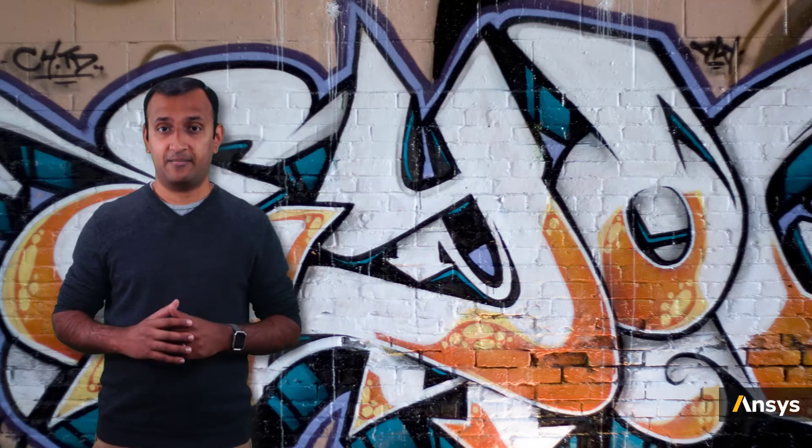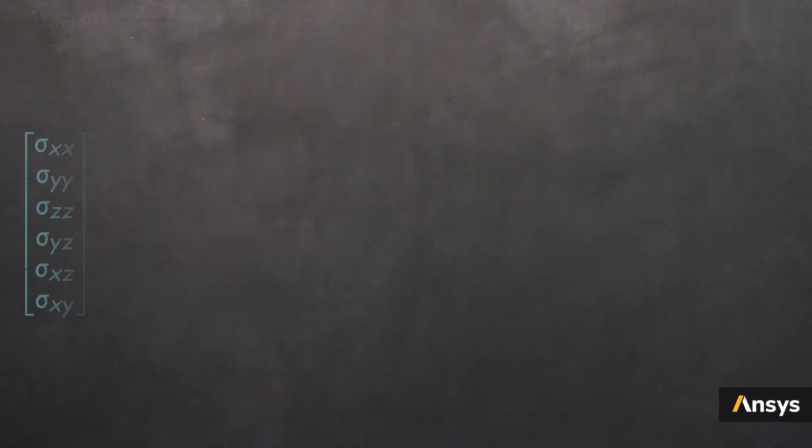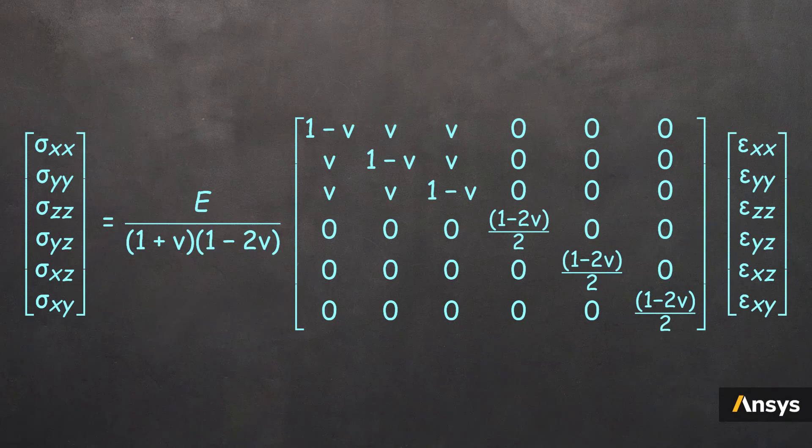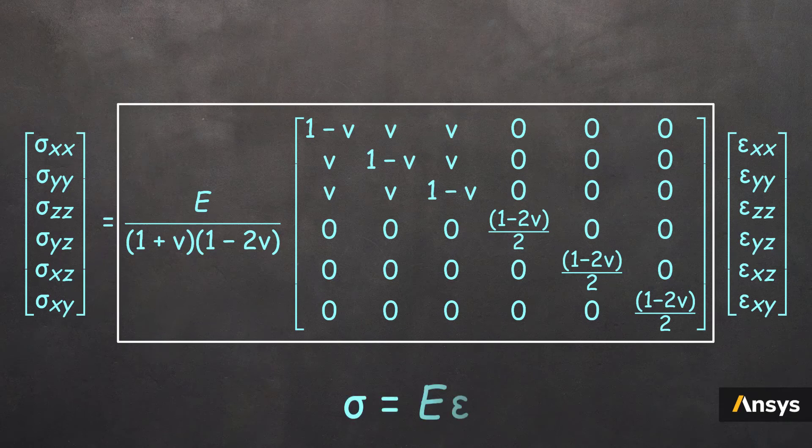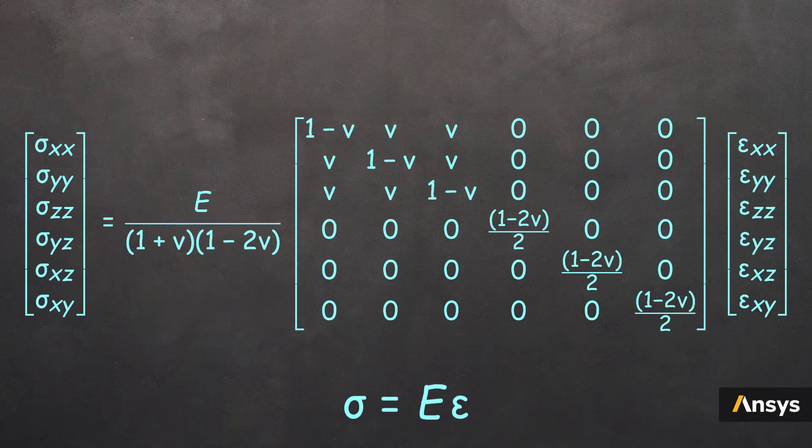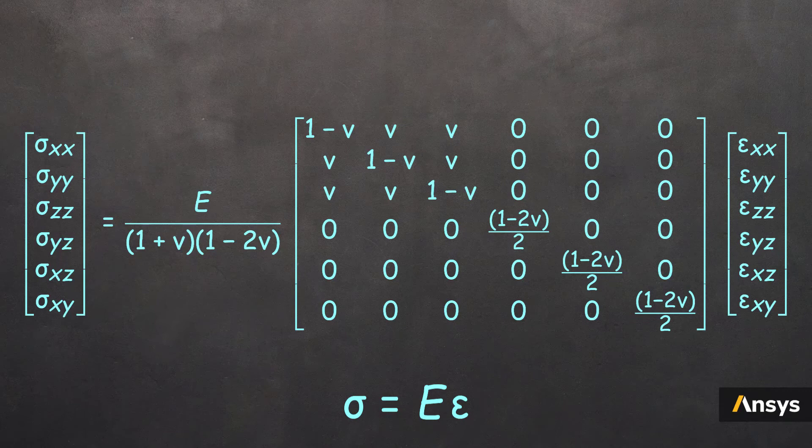Now as one last step, let's invert the compliance tensor and define stress as a function of strain. This is what the inverted equation looks like, and this tensor is nothing but the stiffness matrix. And it can be written in a linear fashion as shown in this equation. This is what the Hooke's law relation looks like in a three-dimensional isotropic body.